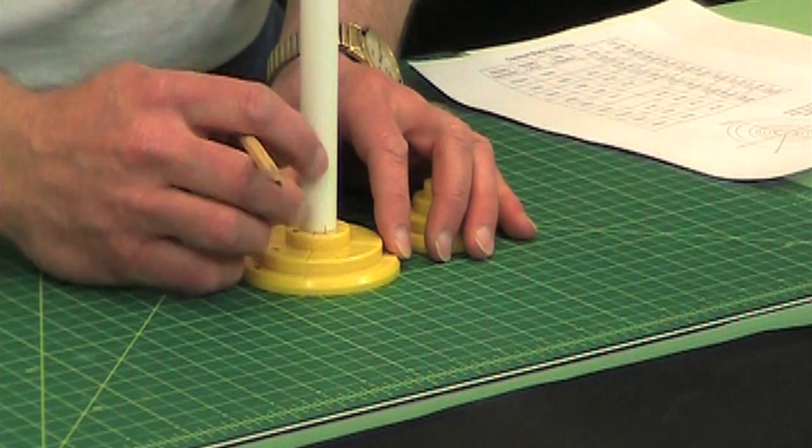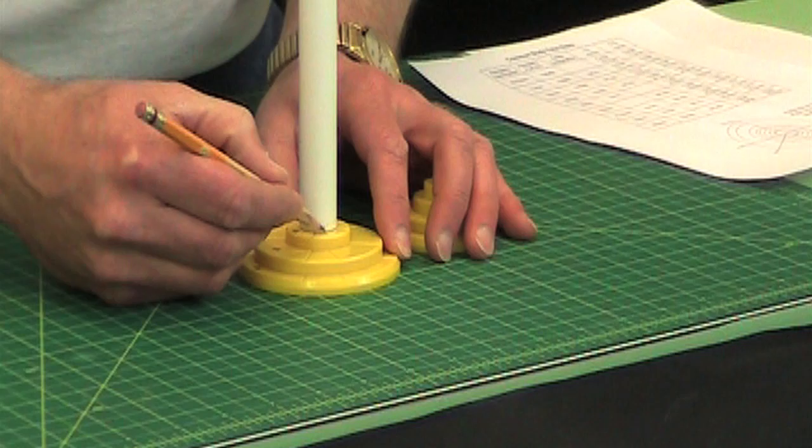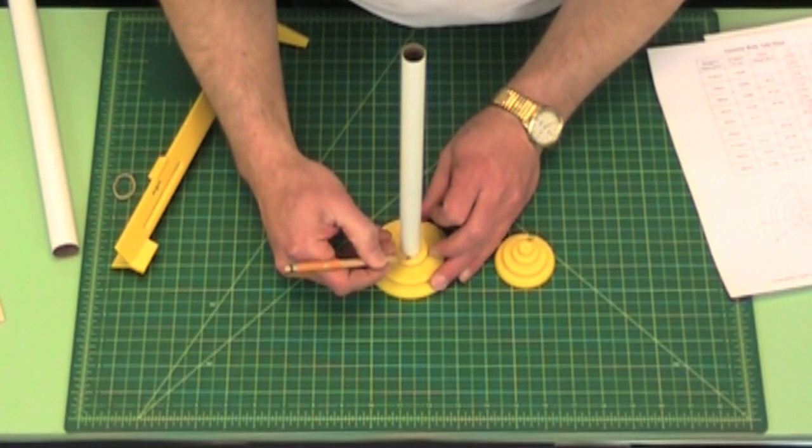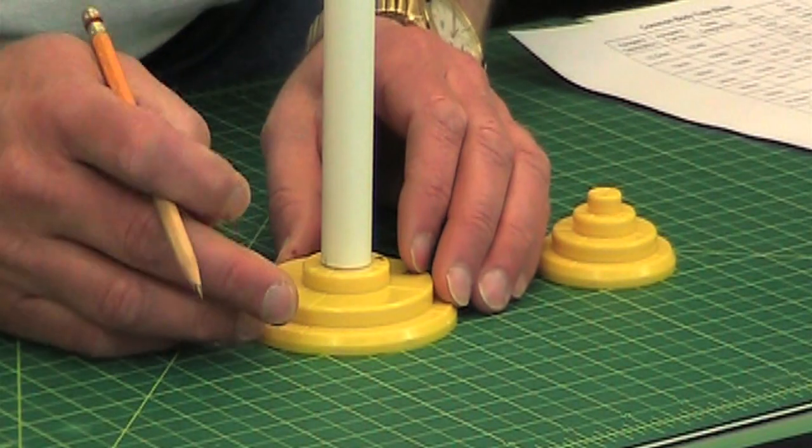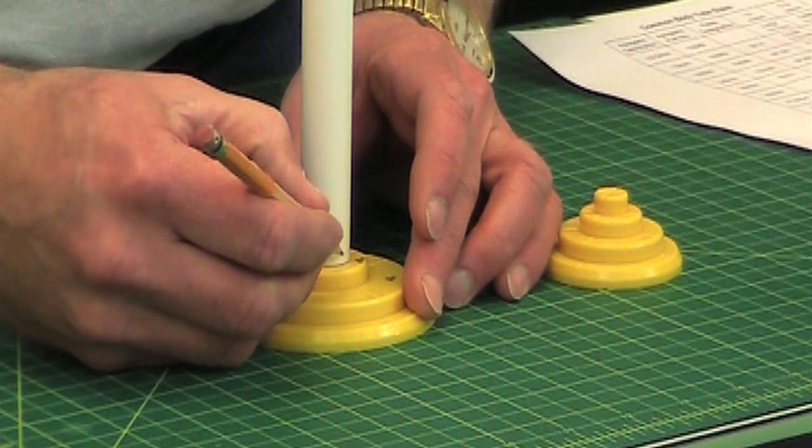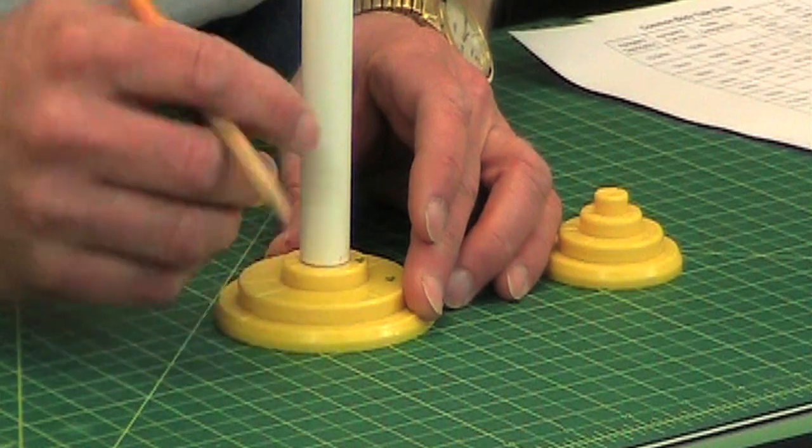So you align it right here, make the mark, spin it around. If I was doing three fins I would do this line right here and then finally I would do this one right here, and that would give me tick marks for the three fins.